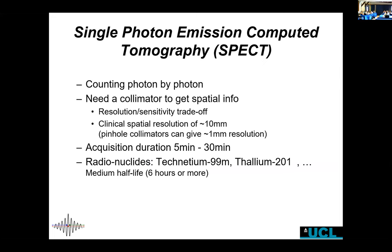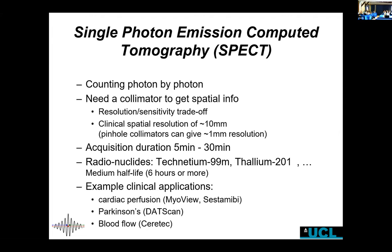There is a resolution-sensitivity trade-off. We want to detect as many photons as possible to get the best images, so in clinical practice the collimator holes are fairly wide, otherwise we stop too many photons. Clinical resolution sits around one centimeter, while in animal scanning you can go below one millimeter or even 0.1 mm by making collimator holes smaller — but then you don't detect many photons. Scan durations tend to be fairly long for SPECT, and it uses specialized radionuclides. It's used mostly for cardiac perfusion and brain diseases.